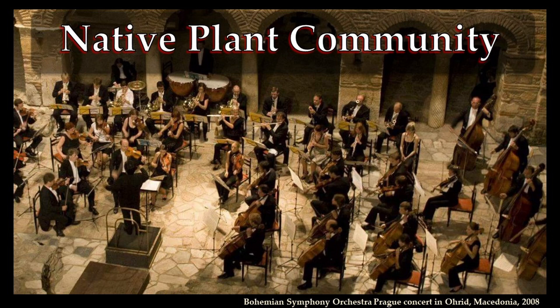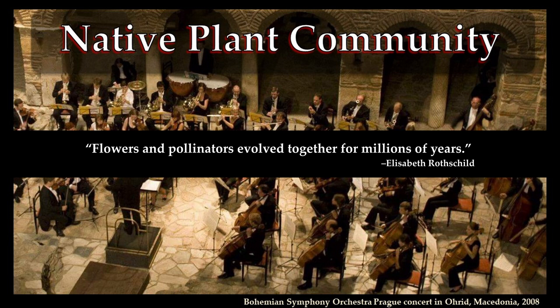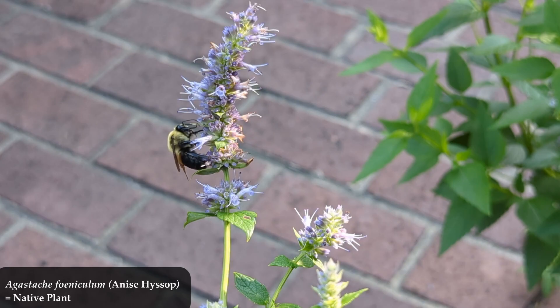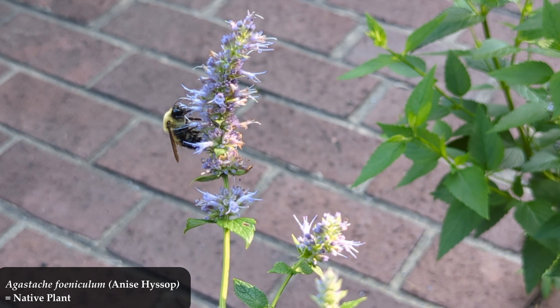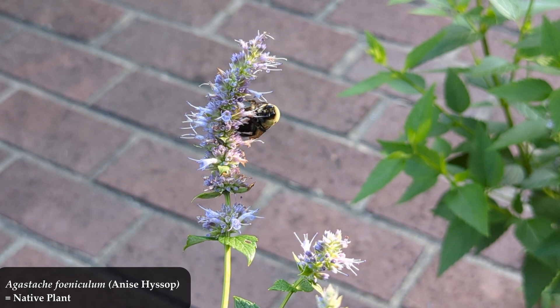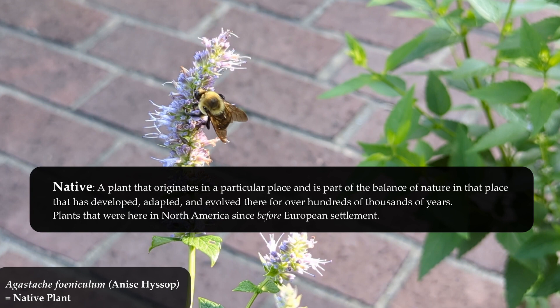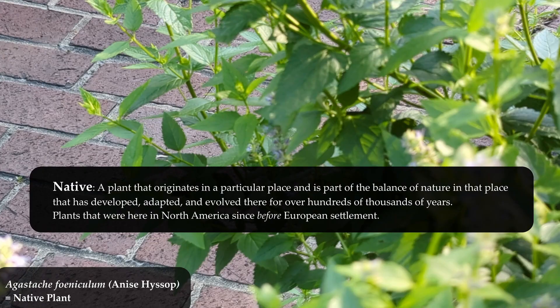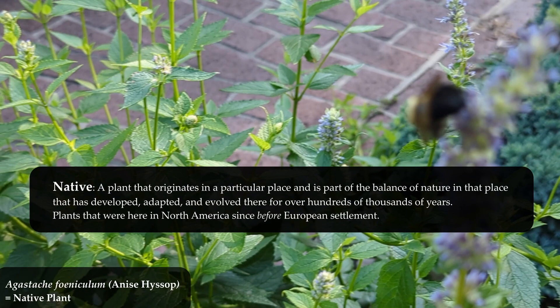I'm going to use an orchestra analogy. The quote on the screen right now is a helpful one to set as a base in your mind. It will help us understand the timescale of things we're going to be talking about. A native plant is a plant that originates in a particular place and is part of the balance of nature in that place that has developed, adapted, and evolved there for over hundreds of thousands of years.